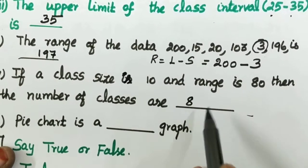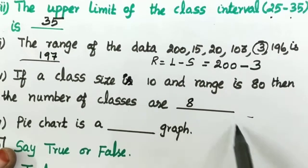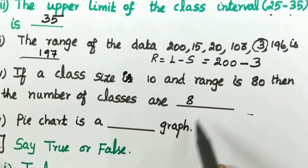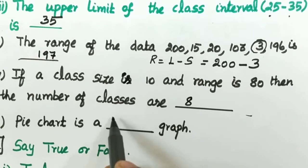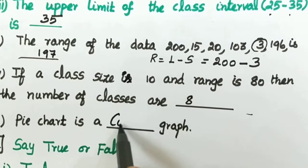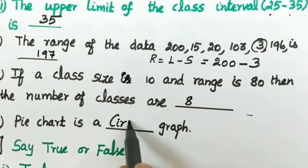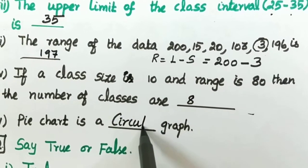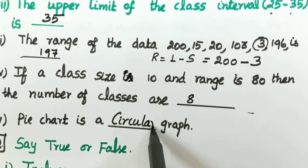Pie chart is a dash graph — the answer needs to be filled in for what type of graph a pie chart is.